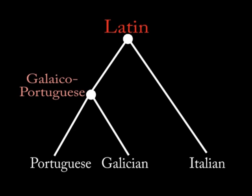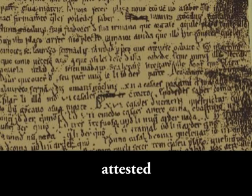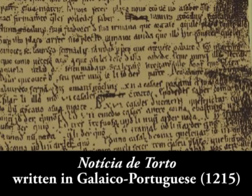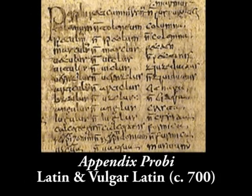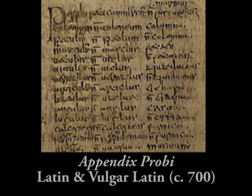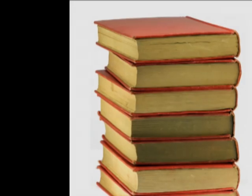In at least some small way, these two languages — Galician-Portuguese and Vulgar Latin — are attested. That means we have documents we can look back at today that were written in those languages. We have some attestation of their existence. We know what they look like, we can see their vocabulary items in written words, and based on other evidence, we actually have some knowledge of how those words were pronounced.